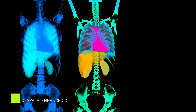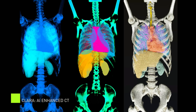What you are looking at is a 3D volume generated from a CT scan. By using techniques like ray tracing, realistic materials, and realistic lighting, we create a cinematic quality image of human anatomy that is easy for anyone to understand.